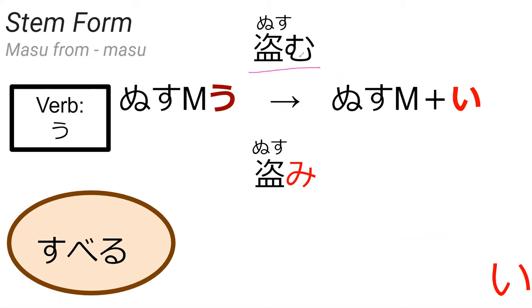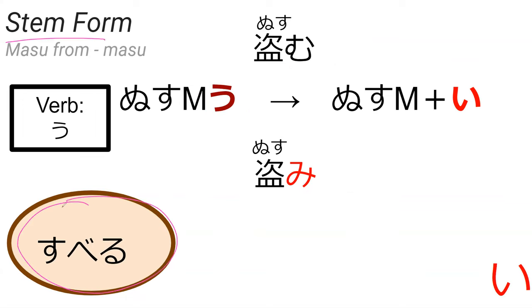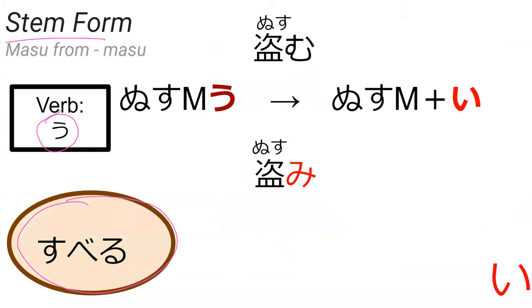Nusumu means to steal. Nusumu has this final u sound, and all you do is remove the u and add an e to make nusumi. So what would be the stem form of suberu? It's a ru-verb, so it's actually an u-verb, and it needs an e sound — so it's suberi. Suberi — perfect.